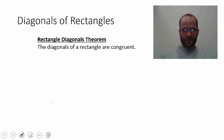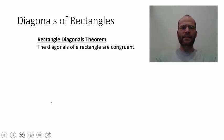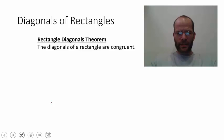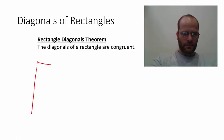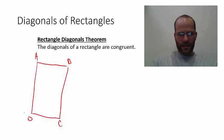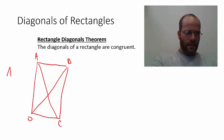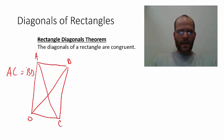Let's talk about the diagonals of a rectangle. We have something called the rectangle diagonals theorem. It says the diagonals of a rectangle are congruent. So if I'm looking at rectangle ABCD, the diagonals DB and AC are congruent — AC equals BD. Anytime I have a rectangle, I can be sure that the diagonals are congruent.